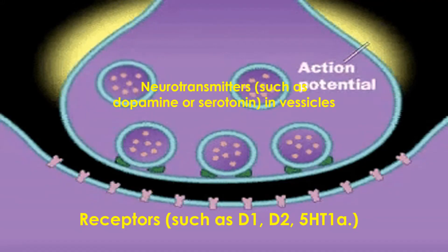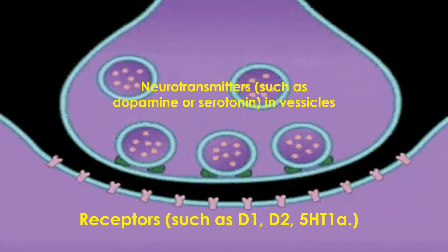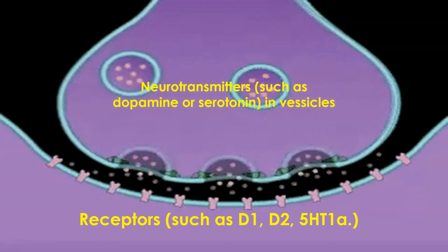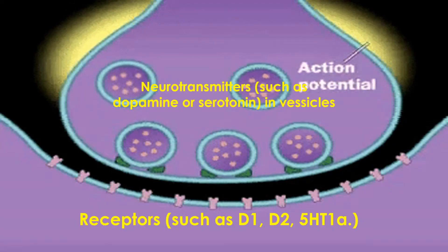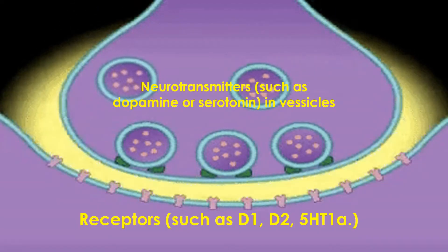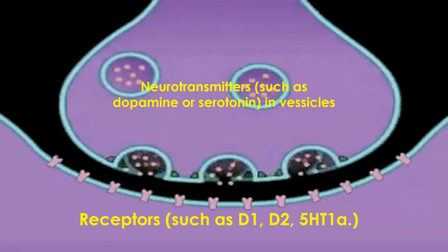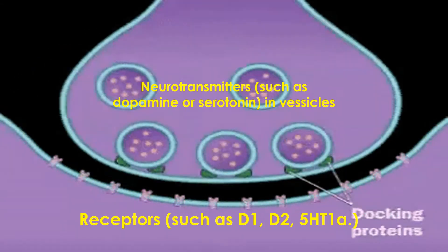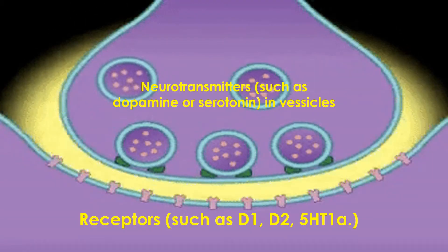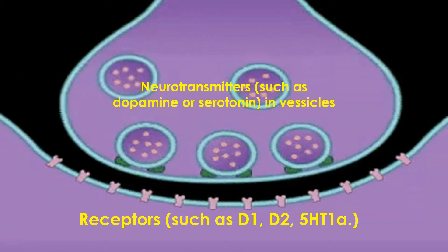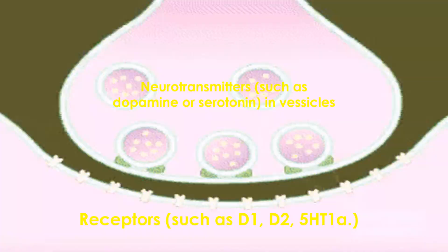When a signal travels through a neuron — for example, a bee stings you on a toe — an electrical signal is created which travels up your leg to your spinal cord. The action potential causes the release of neurotransmitters, which are stored in little bags called vesicles. The vesicles break open, the neurotransmitter is released into the synaptic gap or synaptic cleft, and then some of those neurotransmitters will bind with receptors.